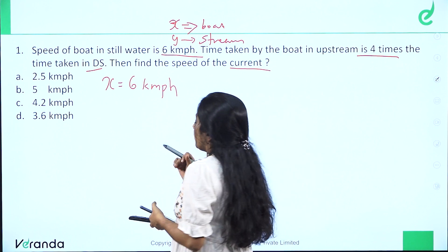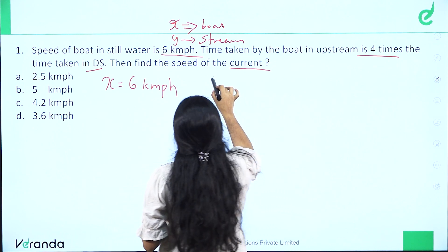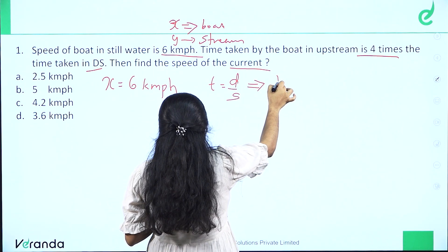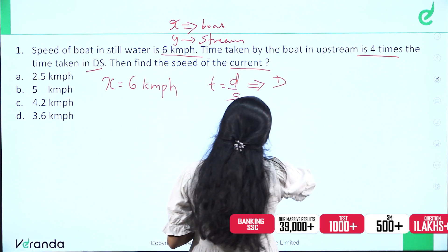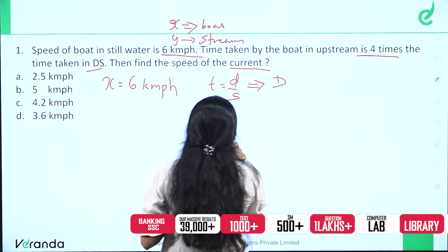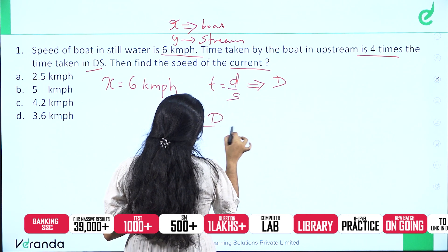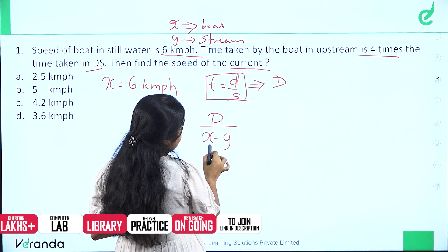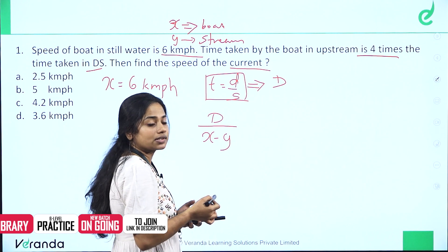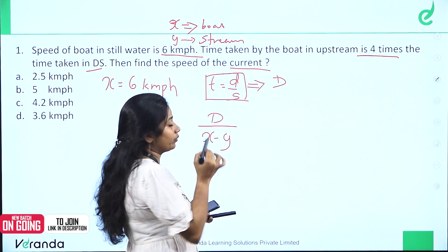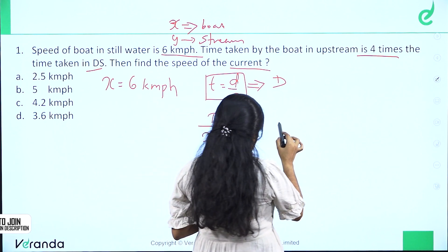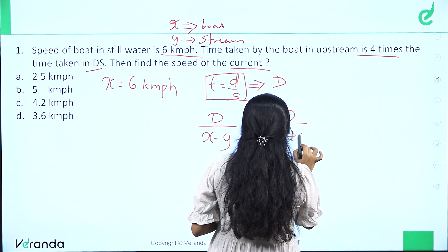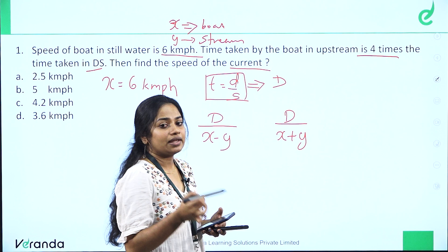Time is distance divided by speed. Upstream speed is x minus y, so upstream time is d divided by x minus y. Downstream speed is x plus y, so downstream time is d divided by x plus y. Upstream time equals 4 times downstream time.